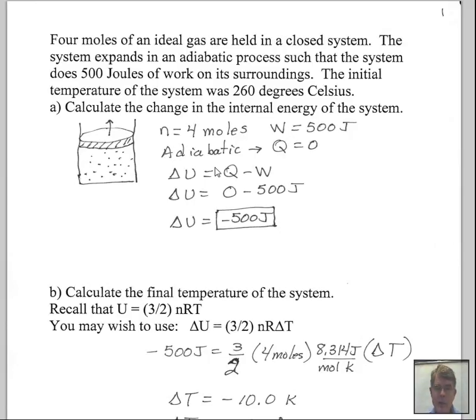Calculating the change of internal energy uses the first law of thermodynamics. The first law tells us the change in internal energy can be computed with Q minus W. We have zero for Q, we have 500 for the work. The minus sign here is part of the first law. So the work was positive, but we have a change in internal energy of minus 500 joules.